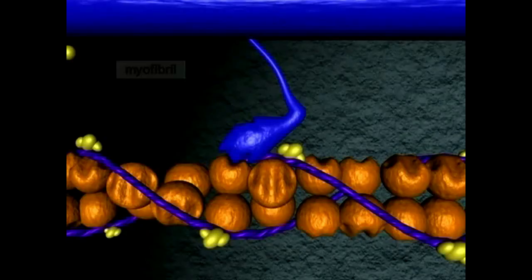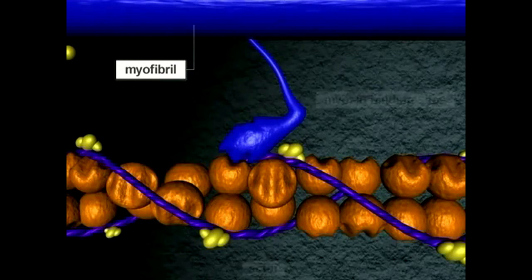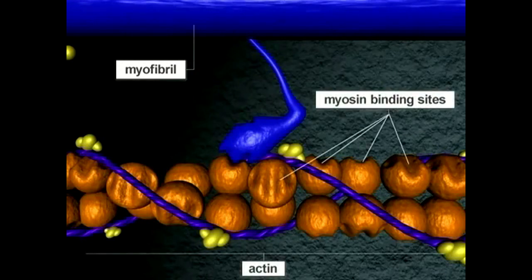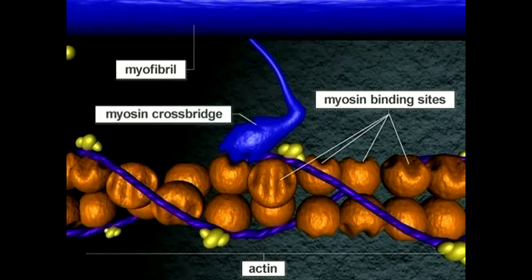With calcium elevated around the myofibrils, myosin binding sites on actin are exposed, allowing interaction of the myosin cross-bridges with actin.